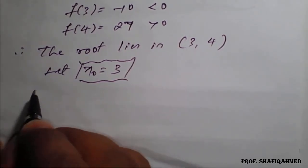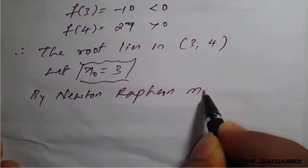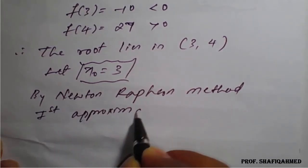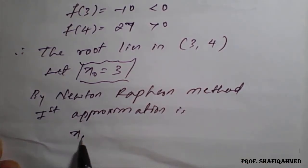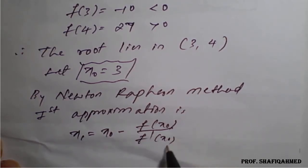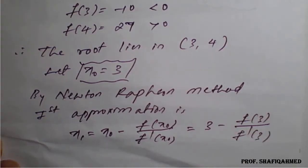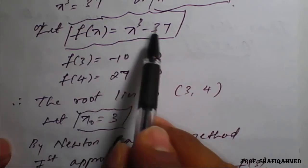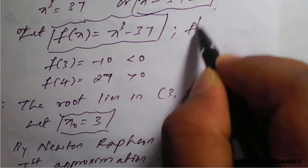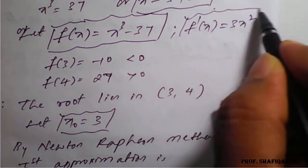We will go for the first approximation by Newton-Raphson method. By Newton-Raphson method, the first approximation is x₁ equals x₀ minus f(x₀) divided by f'(x₀), which is 3 minus f(3) divided by f'(3). Our f(x) is x cubed minus 37. We need to find f'(x): differentiation of x cubed is 3x squared, and differentiation of 37 is 0, so f'(x) equals 3x squared.